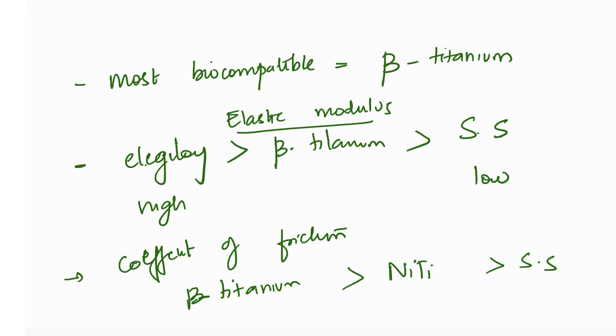Three more points I want you to remember: when they ask which is the most biocompatible and beta titanium is in the options, select it. When it comes to elastic modulus, the order is Elgiloy has the highest, followed by beta titanium in the middle, and stainless steel the lowest.